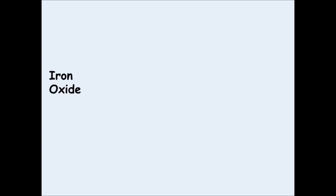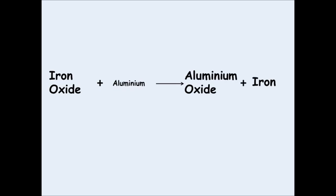If we look at the following reaction — if you reacted iron oxide with aluminium, would you know what the products were? Well, aluminium oxide and iron are left. You can see that the aluminium has kicked out the iron, taken the oxygen, and left the iron on its own. You need to be able to predict the products for reactions such as these.